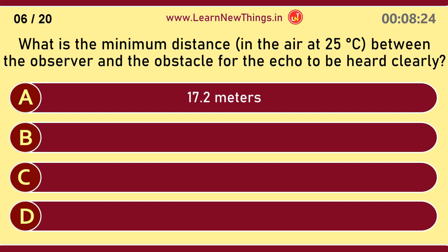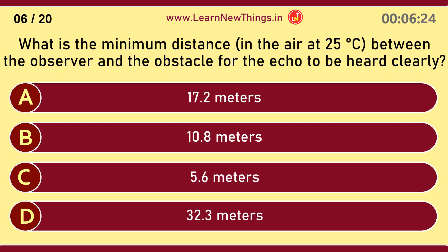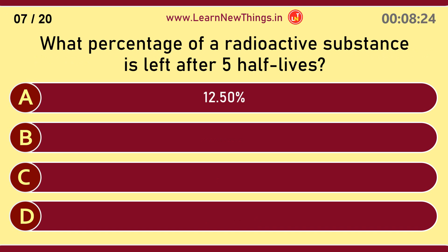What is the minimum distance in the air at 25 degrees Celsius between the observer and the obstacle for the echo to be heard clearly? 17.2 meters. What percentage of a radioactive substance is left after 5 half-lives? 3.125%.